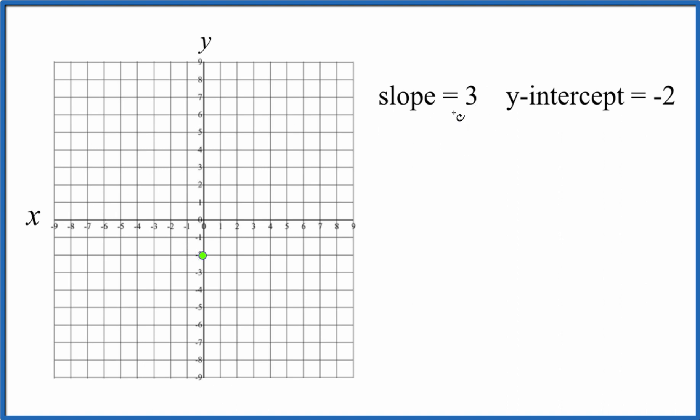Next we look at slope. We have a slope of 3. If we think about that as 3 over 1, we can consider it rise over run.